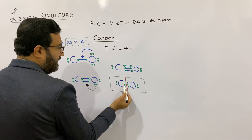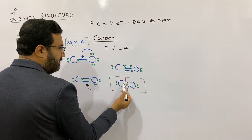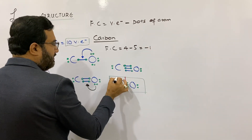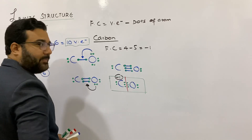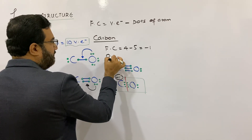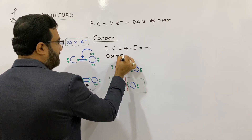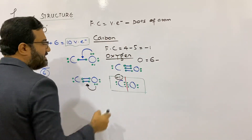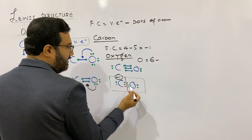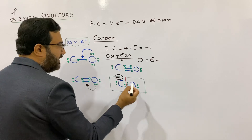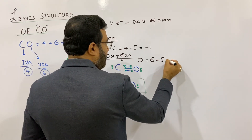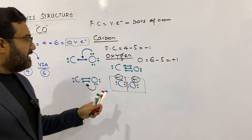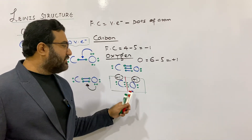How many electrons does carbon have in this Lewis structure? Counting: 1, 2, 3, 4, 5 — it has five electrons. So the formal charge of carbon should be 4 minus 5, which is minus one. And what should be the formal charge of oxygen? Oxygen is a member of group 6A, so its valence electrons are six. How many electrons does oxygen have in this Lewis structure? Counting: 1, 2, 3, 4, 5 — it has five electrons. So the formal charge of oxygen is 6 minus 5, which is plus one.